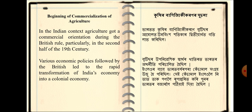The beginning of the commercialization of Indian agriculture was related with the foundation and expansion of British rule in India. In the Indian context, agriculture got a commercial orientation during the British rule, seen particularly from the second half of the 19th century. Various economic forces followed by the British led to the rapid transformation of India's economy into a colonial economy. In the following slides we will look at the various economic policies that compelled the Indian farmers to undergo this transformation called commercialization of agriculture.